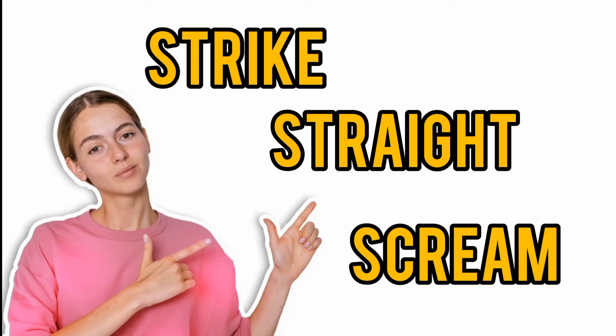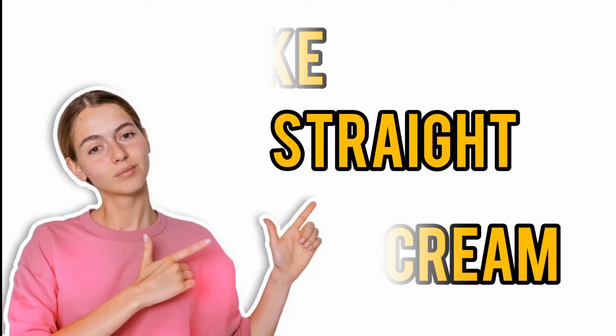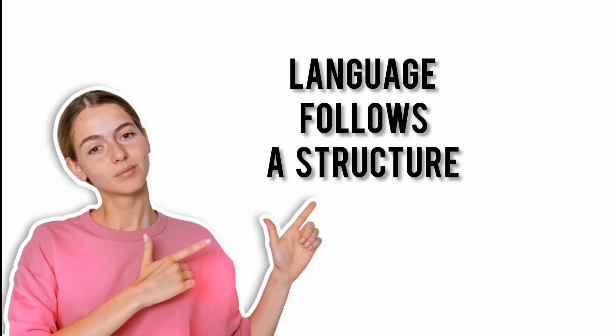So what do we understand? We understand that the three words form a structure. This is why language has a structure. For example, three words are consonant sounds, but the fourth word is the vowel sound.